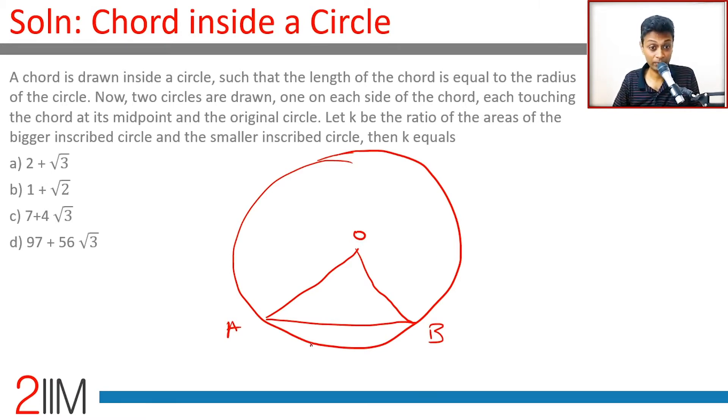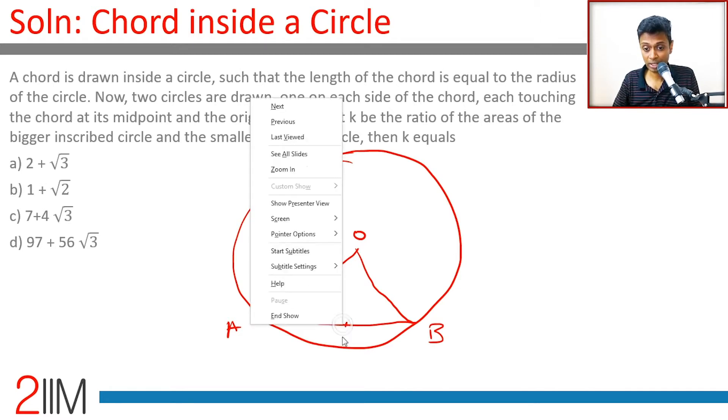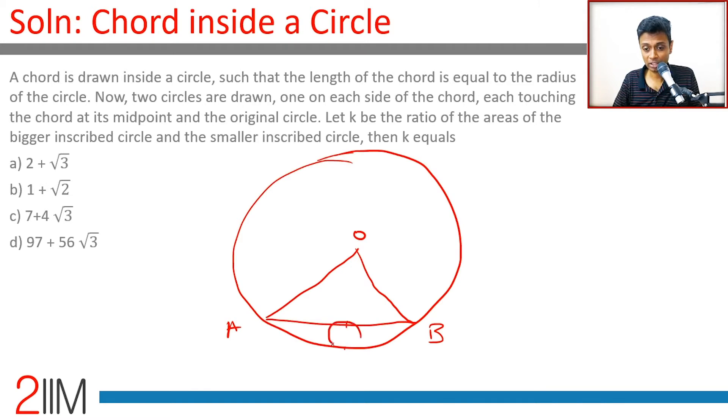Now two circles are drawn, one on each side of the chord, each touching the chord at its midpoint and the original circle. So we're effectively talking about a circle like this and a circle like this. Pardon my diagram, we're not worried about the diagram, we're worried about the concept, the funda. Once you crack this, this question becomes very doable.